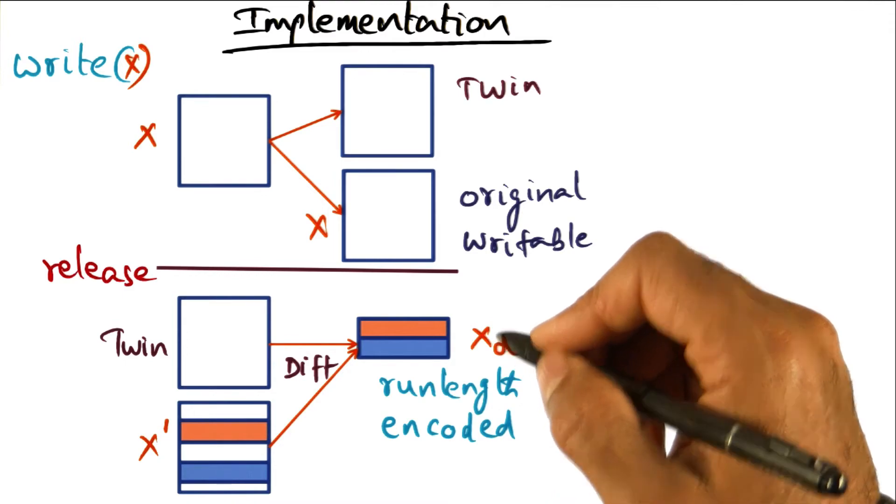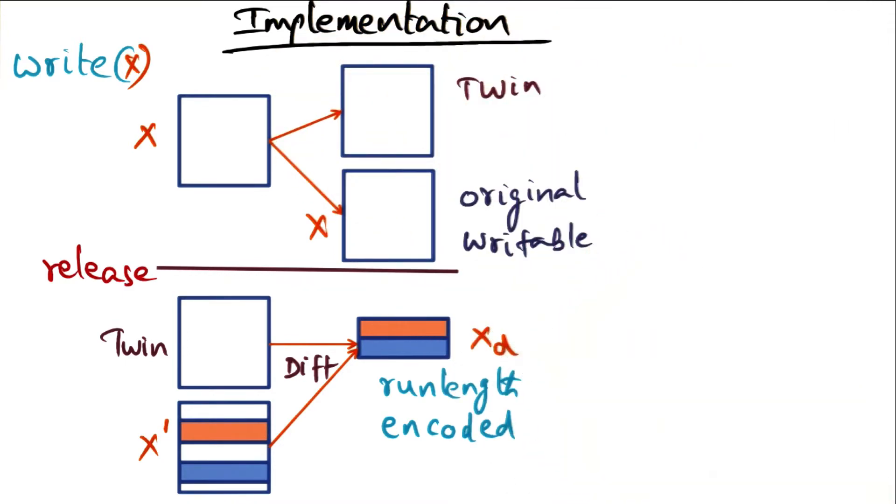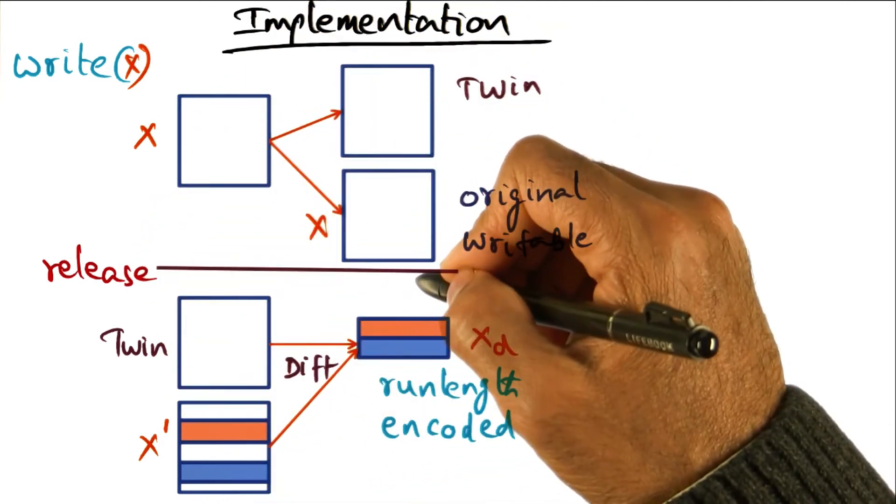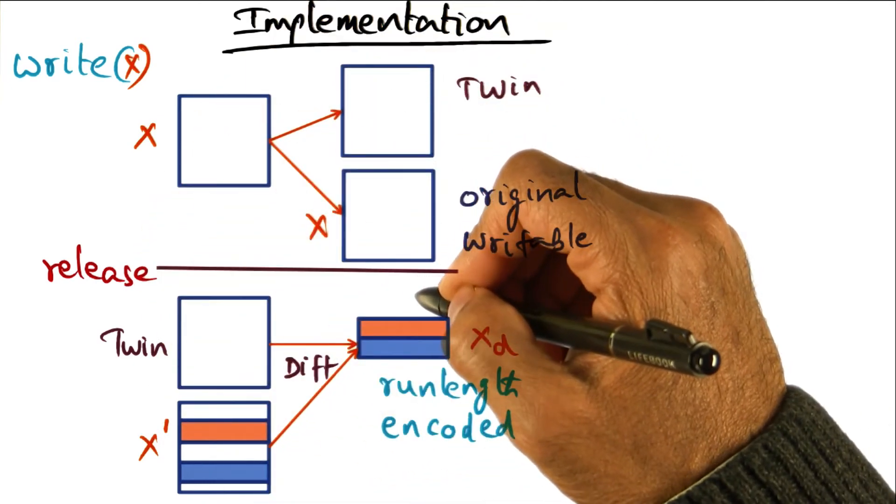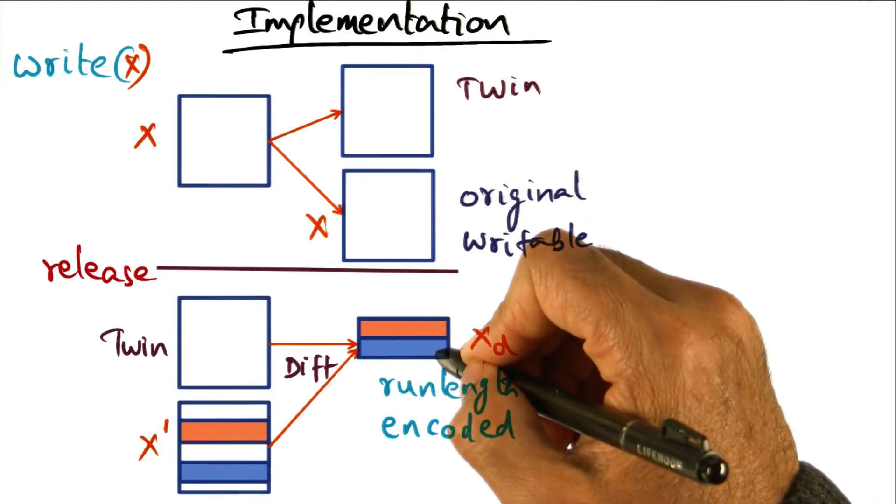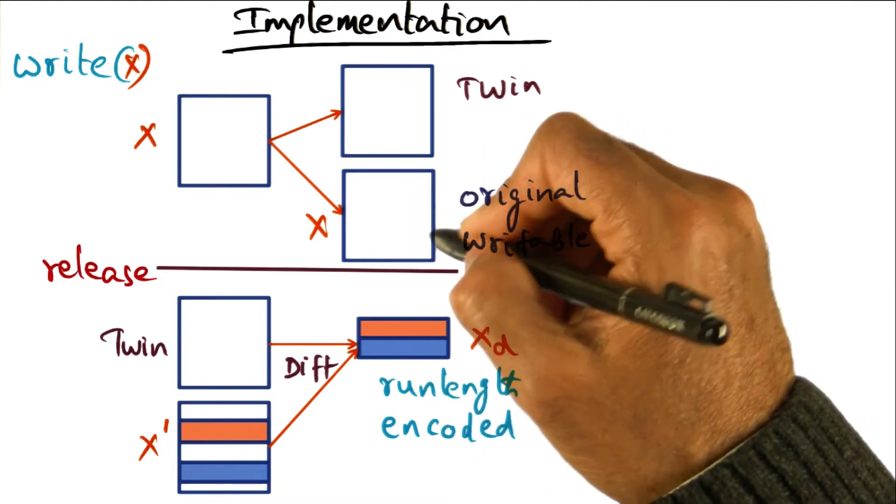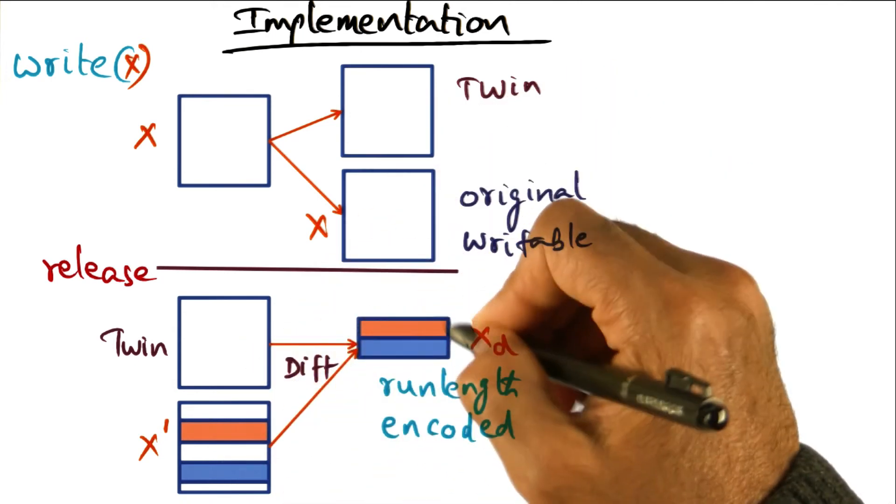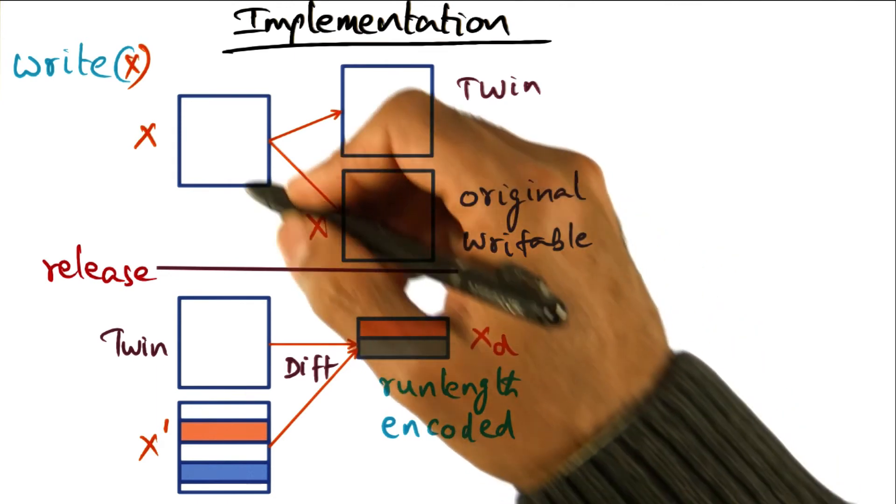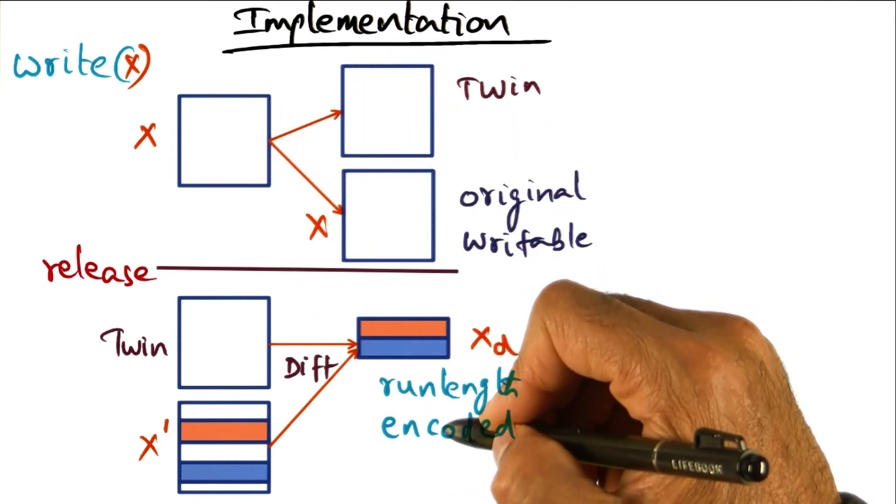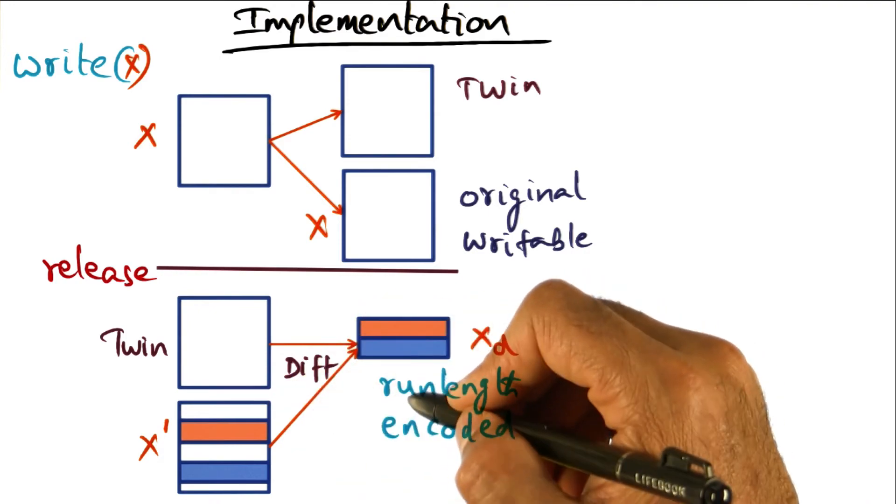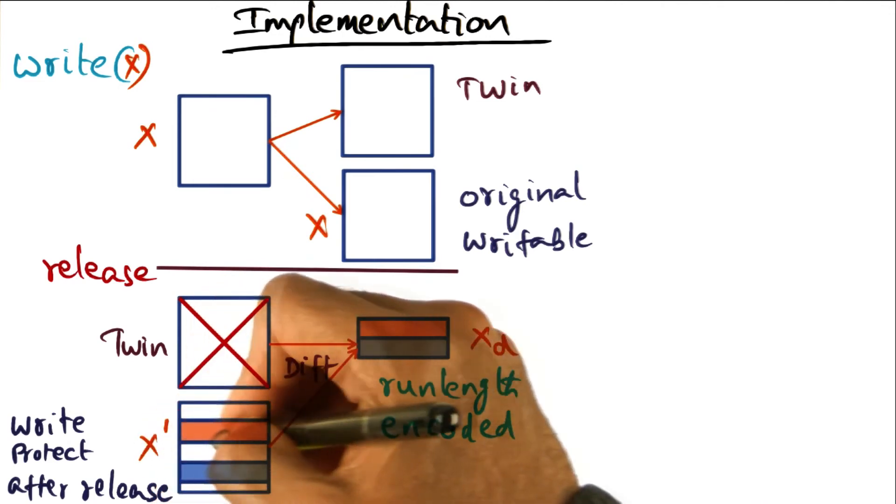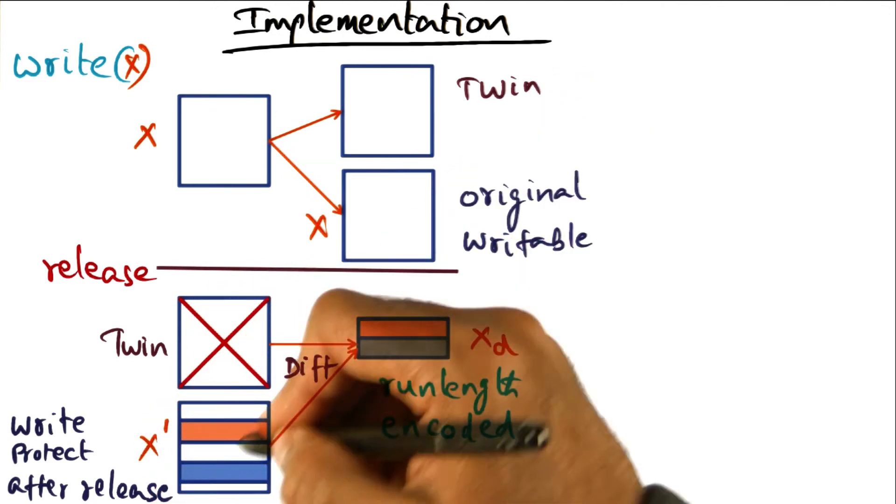So that's part of what goes on under the covers in the implementation. But so far, as this node is concerned, when the release operation is done, at that point, the DSM software is going to compute the diff between changes made to this page and its original copy of the page, and keep that as a diff data structure. And if there are multiple pages, all of the diffs will be created at the point of release. And once this thread, that was in this critical section, has completed its release operation, we will write protect this page X.